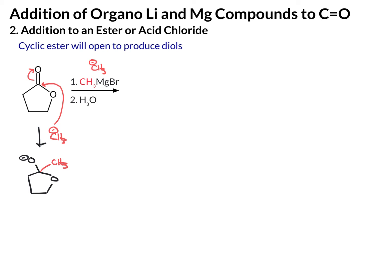From here, our leaving group is the oxygen, even though it's tethered to the rest of the molecule. I'm going to push these electrons down and break the carbon-oxygen bond. So we end up now with our double bond O, the methyl group attached, and then we have the carbons that were part of the ring, and this is bonded to what is now O minus. We have a ketone at the top, and that will react with a second equivalent of CH3 minus.